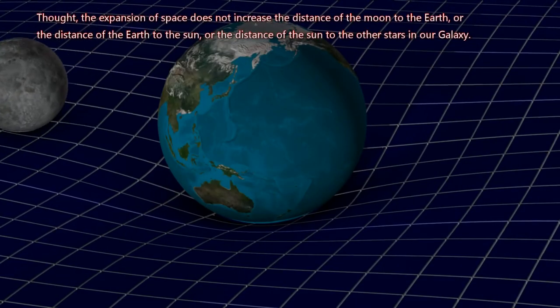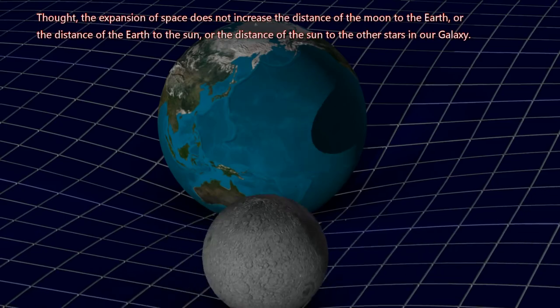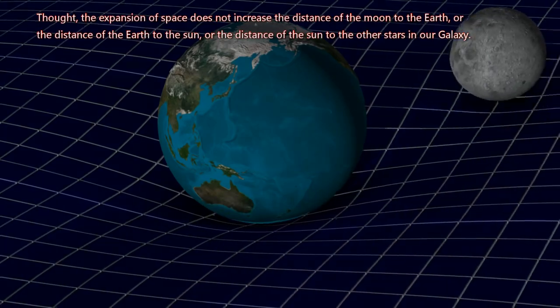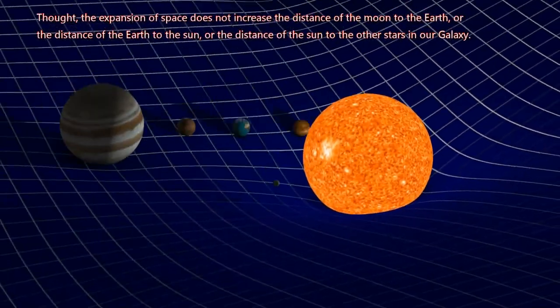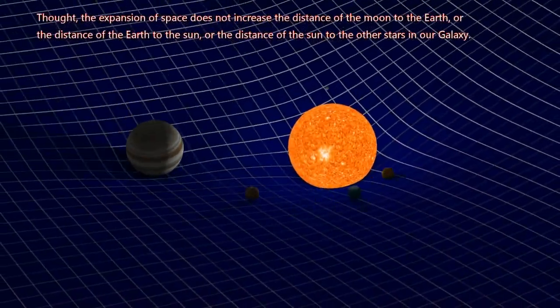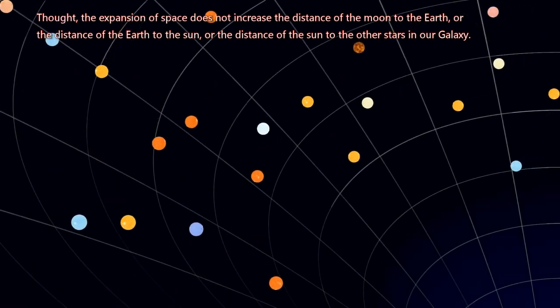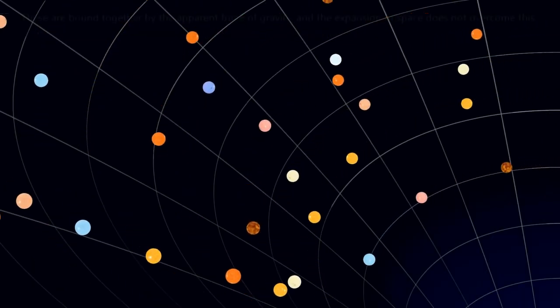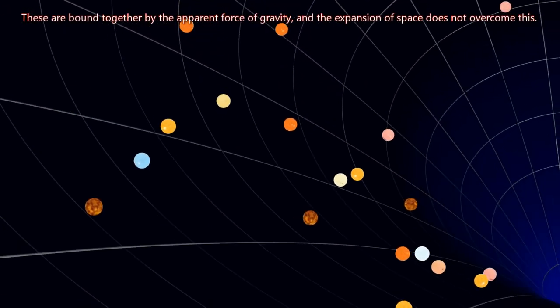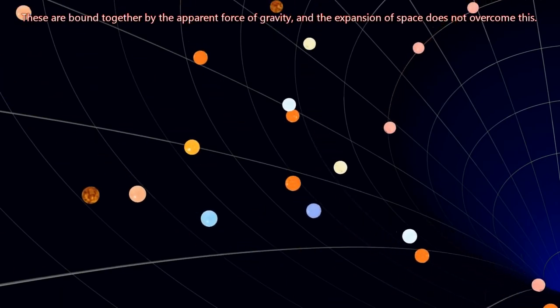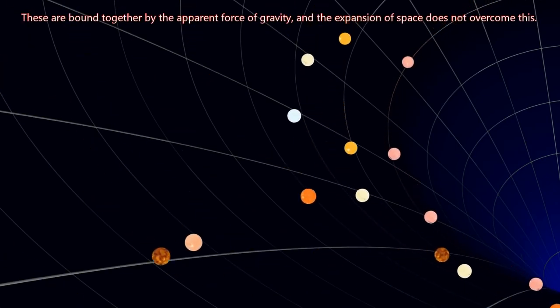Though, the expansion of space does not increase the distance of the Moon to the Earth, or the distance of the Earth to the Sun, or the distance of the Sun to the other stars in our galaxy. These are bound together by the apparent force of gravity, and the expansion of space does not overcome this.